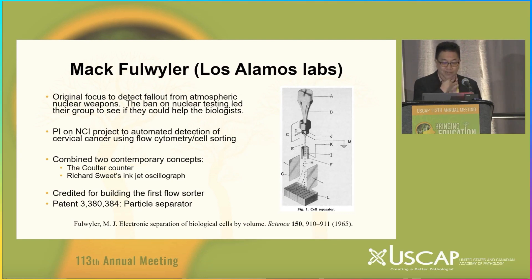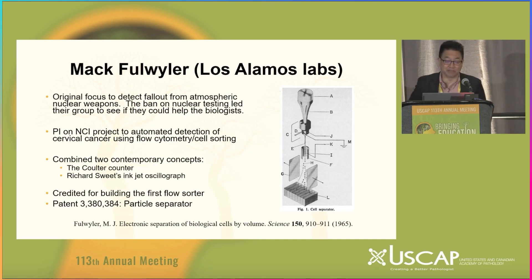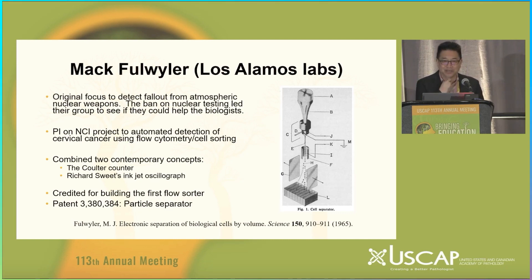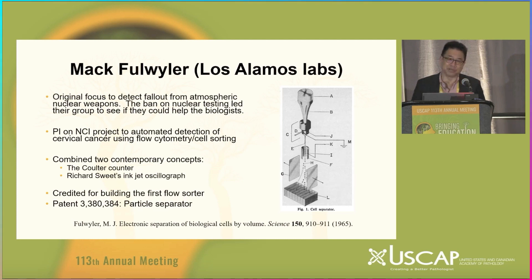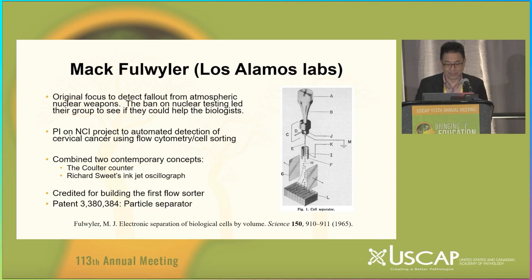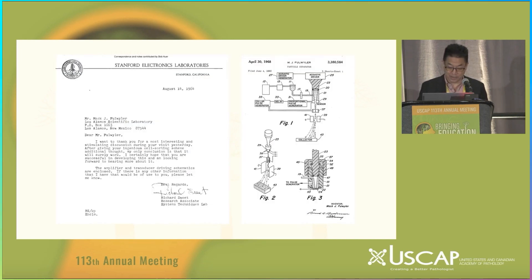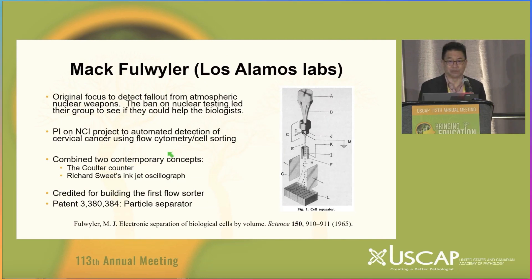Max Fulweiler at Los Alamos Labs was a scientist whose initial focus was detecting fallout from nuclear weapons. After the ban on nuclear testing, he began interacting with biologists there. He invented a flow sorter essentially because he was in an argument with biologists about different cell sizes in blood and wanted to isolate large cells from small ones. He combined two contemporary concepts: the Coulter counter's change in electrical impedance for large cells, and the inkjet oscillograph by Richard Sweet from Stanford.